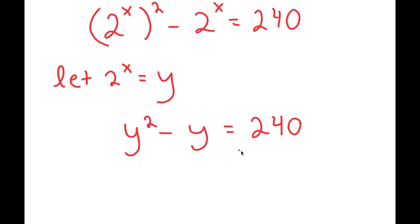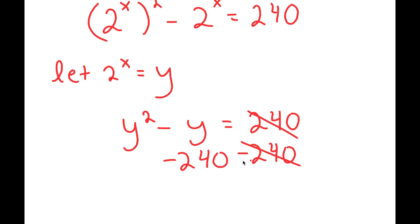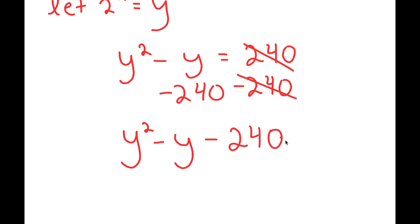And now I can subtract 240 on both sides, so I get y squared minus y minus 240 is equal to 0.